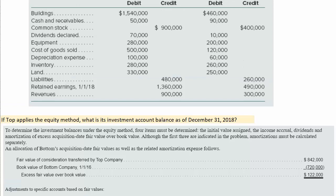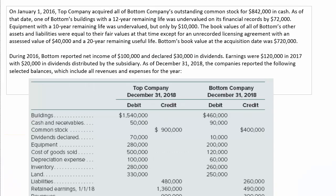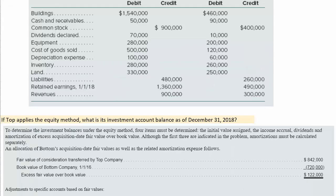Let's focus on the allocation of the acquisition date fair value versus book value. The first thing we have to do is determine the excess fair value over book value. They told us the fair value of the consideration transferred by TOP was $842,000 and the book value was $720,000. So $842,000 less $720,000 gives us $122,000 excess fair value over book value.